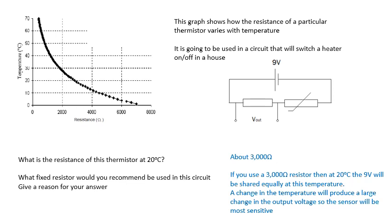What fixed resistor would you recommend? You would use about 3000 ohms as well. That way the voltage is shared between them evenly. And if the temperature changes, you'll get the biggest change in voltage across the resistor. So it will be more sensitive. The change in voltage per change in temperature will be greatest.